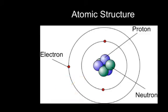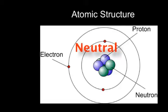In normal atoms, the number of electrons is equal to the number of protons in the nucleus. This means that a normal atom is electrically neutral, since the positive protons cancel out the negative electrons.